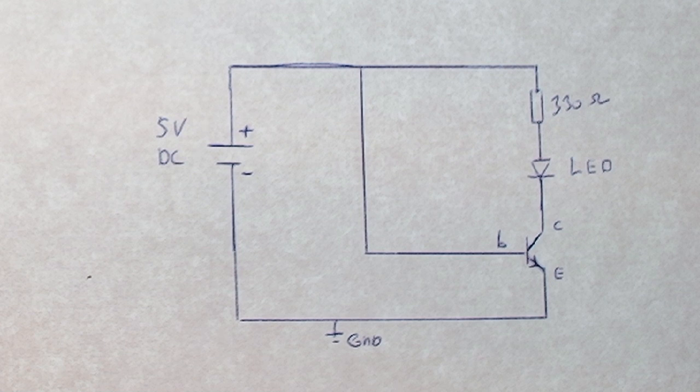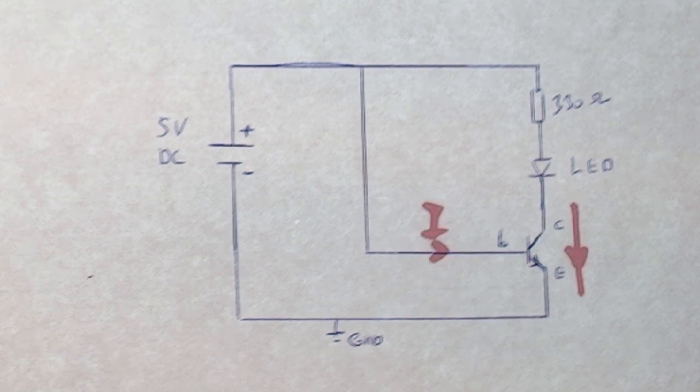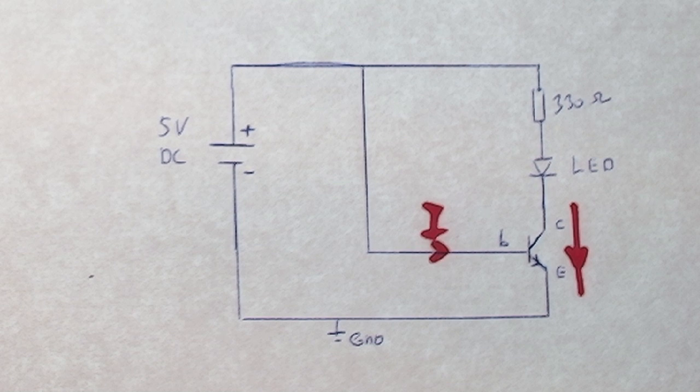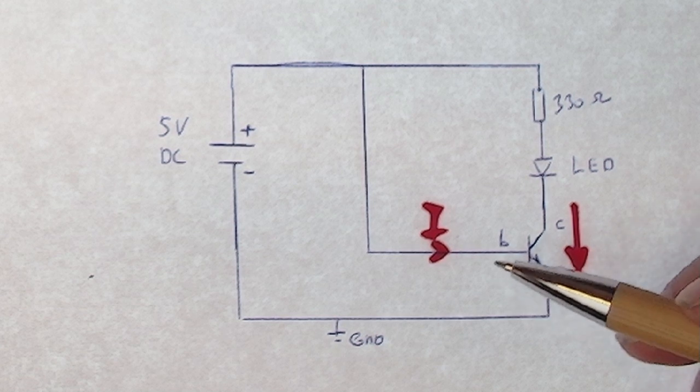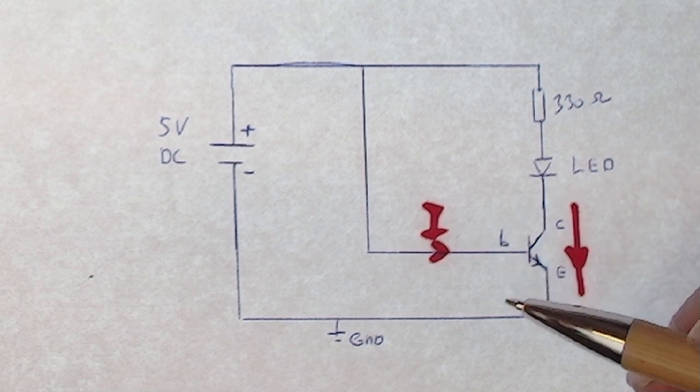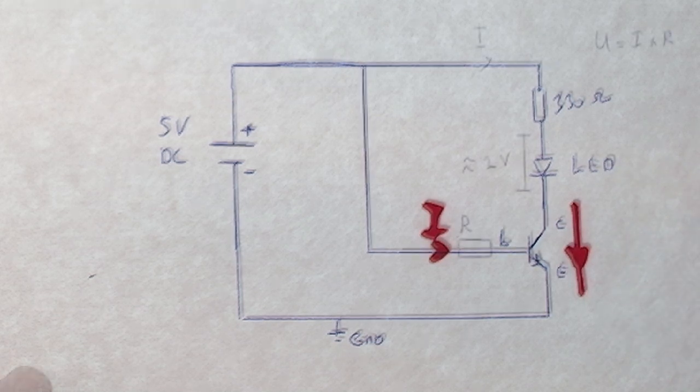So I drew a new simple schematic to explain how it works. Now with the transistor, the problem is the same as with the LED: when it turns on it has a low resistance, and so we need to reduce the current in the base. So that's the next thing we are going to determine.